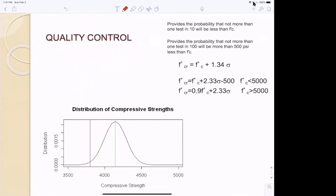Quality control - we don't want to use the average. That's F prime CR. Because if you use the average strength, that means half of the time, your concrete strength will be less than average. So what you want to do is set your strength somewhere higher. If you use this equation, it's like one out of 10 times it'll be less than F prime C.